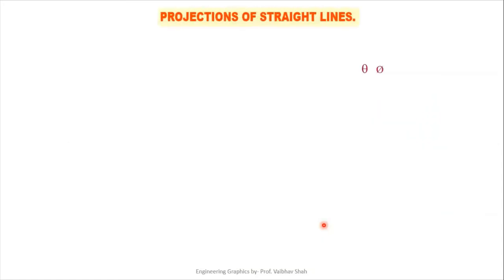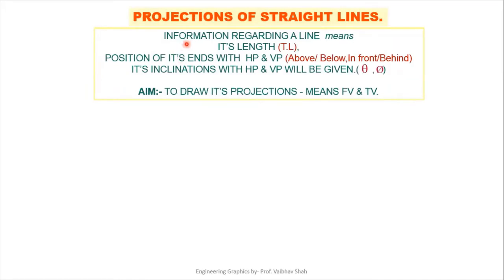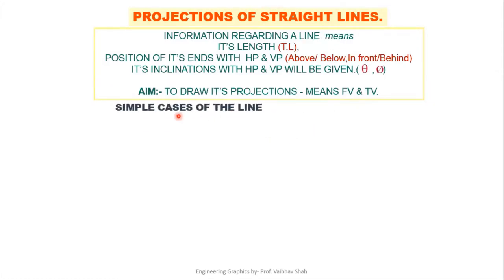Now let us start with Projection of Lines. Information regarding a line must be given: its true length, position of its ends with respect to HP and VP — above and below HP, in front and behind VP — and its inclination with HP and VP. Theta is inclination with HP and Phi with VP. Our aim is to draw the front view and top view. We will have a total of 5 cases.